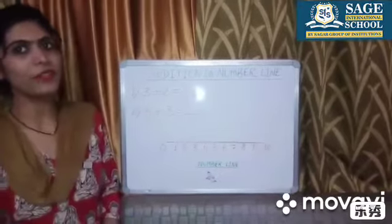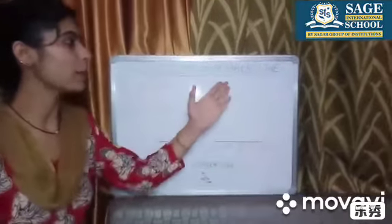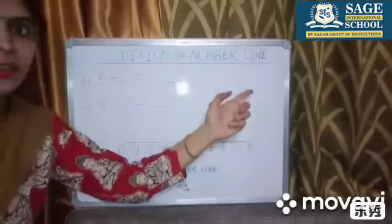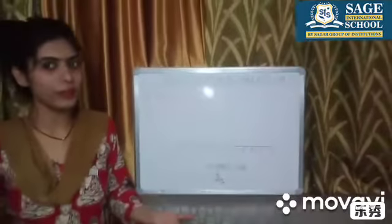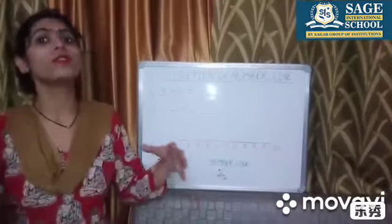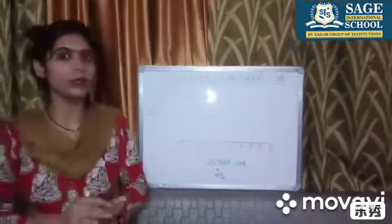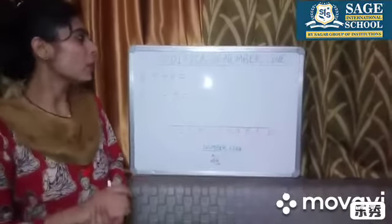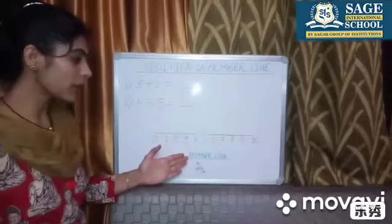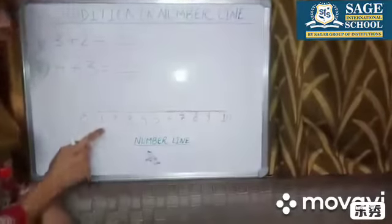Good morning dear children. Today we'll see addition on a number line. As we all know, addition means joining, putting things together, combining all together. So today we'll see how to do addition on a number line. Let us see what is a number line — a number line is a line in which numbers are marked.